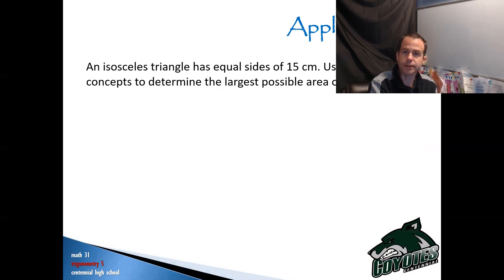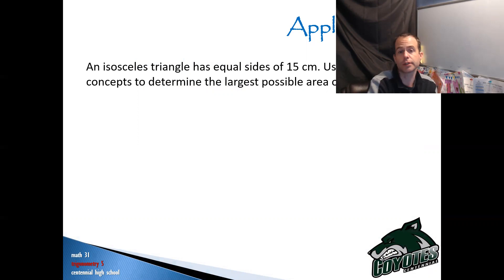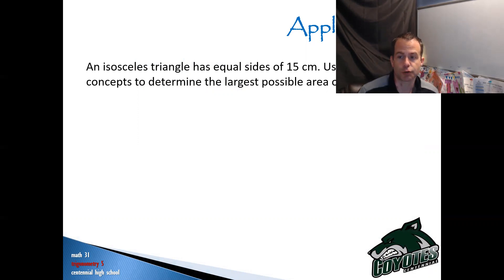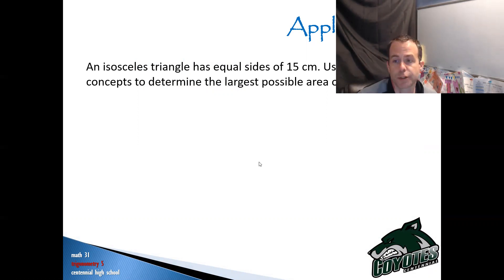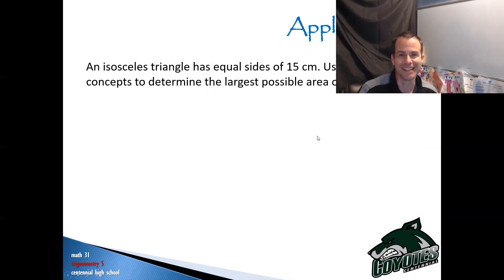So here's the first one. An isosceles triangle has equal sides of 15 centimeters. Use calculus concepts to determine the largest possible area of the triangle. Obviously, we're going to try and do this from a trig perspective, otherwise this wouldn't be in the trig unit.